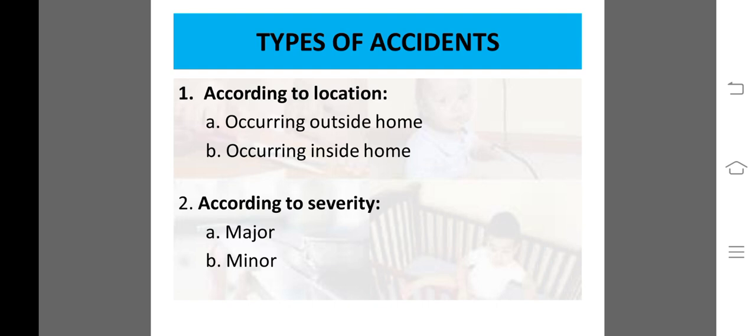Severity کے لحاظ سے accidents major اور minor دو طرح کے ہوتے ہیں۔ Minor کی مثال: slippery floor پر بچہ کھیلے تو slip ہو کر گر سکتا ہے۔ Major یا severe condition جیسے ڈوبنے سے lungs میں پانی جانے کی وجہ سے baby کو pneumonia ہو سکتا ہے، یا toxic inhale کرنے سے body میں reaction ہو سکتا ہے اور case serious ہو سکتا ہے۔ Accident کی severity conditions پر depend کرتی ہے۔